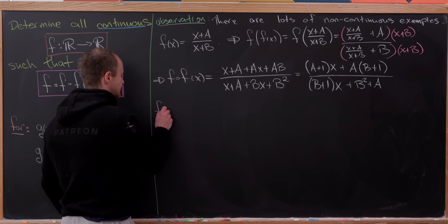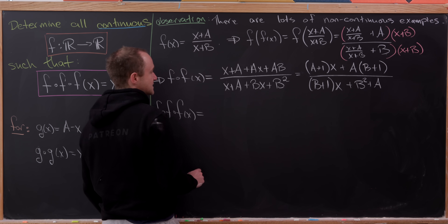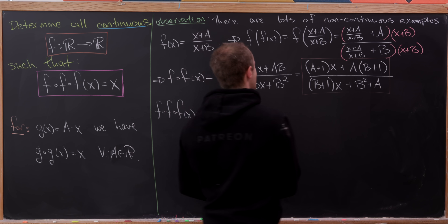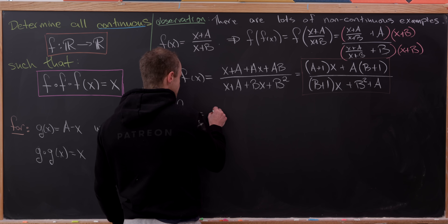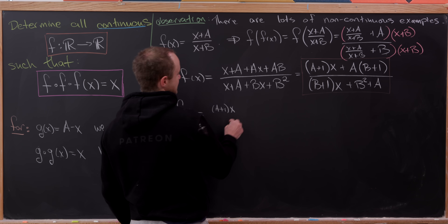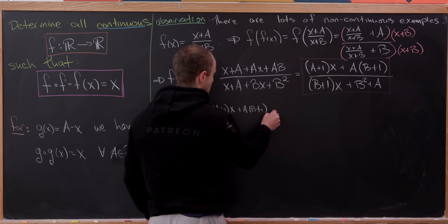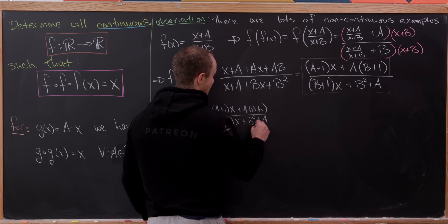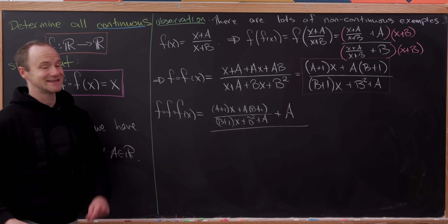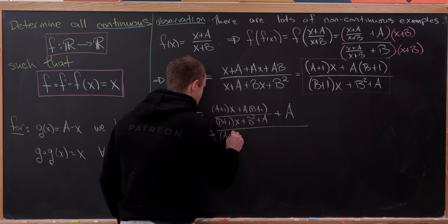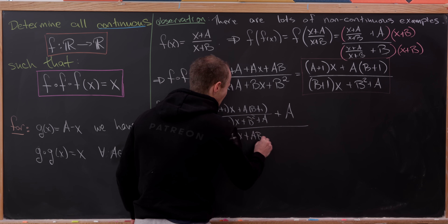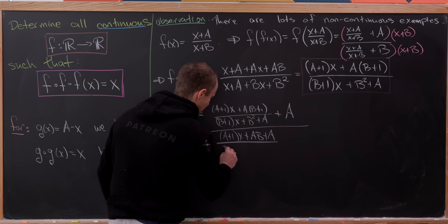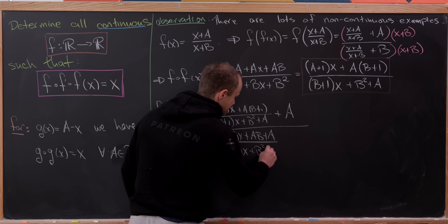Now let's calculate the three-fold composition, f∘f∘f(x). That means we need to put the two-fold composition result inside f(x). So we'll have [(A+1)x + A(B+1)] / [(B+1)x + (B² + A)] as the argument of f, and we add A to the numerator and B to the denominator accordingly. Taking the numerator in yellow brackets and the denominator in red brackets, we multiply through by (B+1)x + (B² + A).